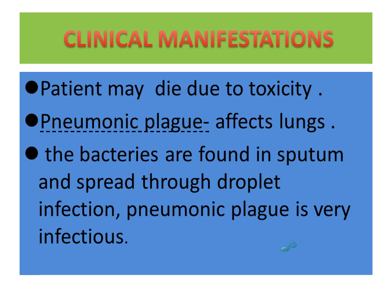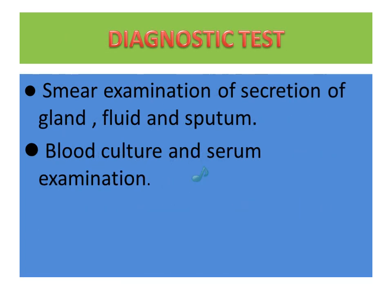Pneumonic plague affects the lungs. The bacteria are found in sputum and spread through droplet infection. Pneumonic plague is very infectious. For diagnostic tests, smear examination of secretion of gland fluid and sputum is done. Blood culture and serum examination is also done.